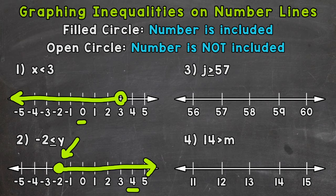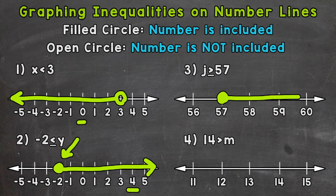On to number 3 where we have j is greater than or equal to 57. Since we have or equal to, any value greater than or equal to 57 would be a solution. We need a filled circle including 57, and then an arrow pointing to the right for all values greater than 57. For example, 60 is greater than or equal to 57, so 60 would be a solution. The filled circle represents 57 being included in our solutions.